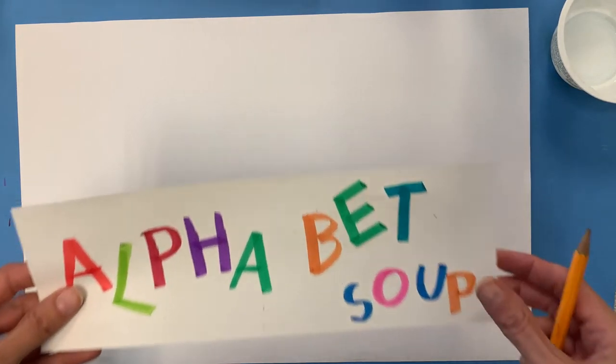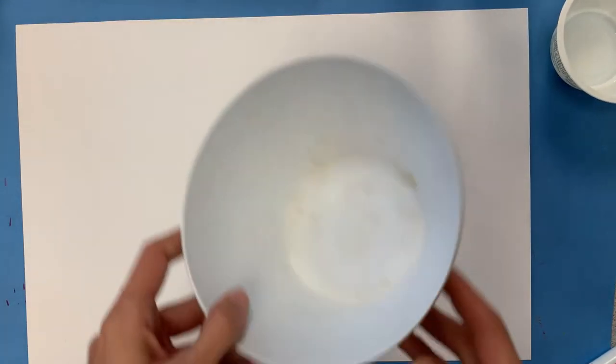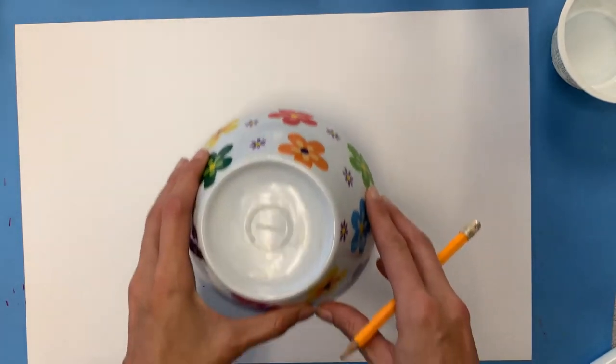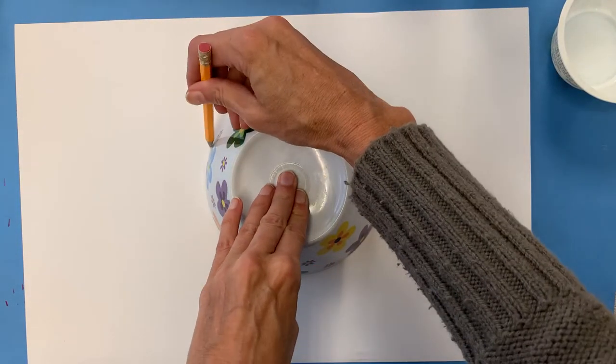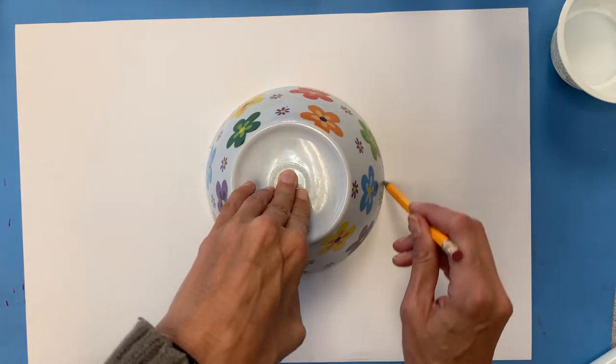It's gonna be several steps and this little video is just step one. First of all I'm gonna take a bowl - I don't know what was in that bowl, don't ask me, but doesn't matter we're not gonna eat out of it. I'm gonna put it face down, hold it down, and with my pencil trace a nice circle around it.